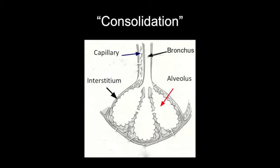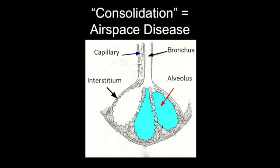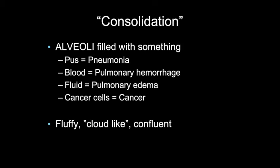What is a consolidation? Here's a schematic of a distal bronchus, several alveoli, and the interstitial space surrounding them. Consolidation refers to airspace disease — something is filling the alveoli and creating this fluffy, cloud-like opacity on the chest x-ray. What's filling the alveoli? It could be anything. If it's pus, it's pneumonia. If it's blood, it's pulmonary hemorrhage. If it's fluid, it's pulmonary edema. If it's cancer cells, it's cancer. So there's nothing specific about a consolidation — it could be anything filling the alveoli.